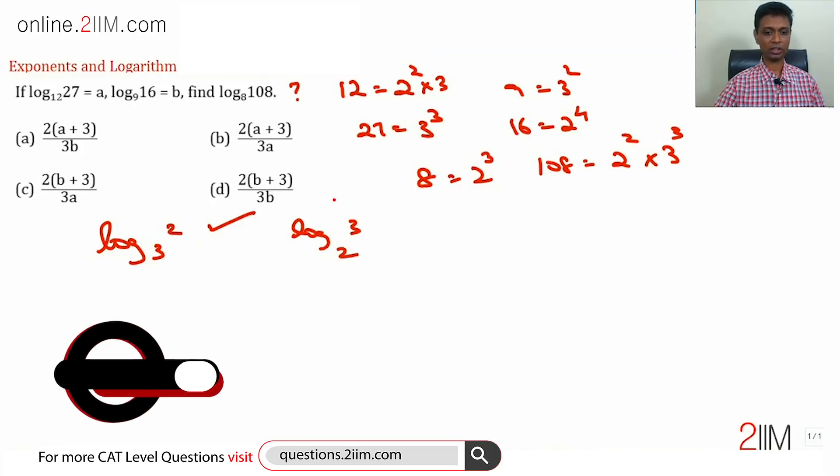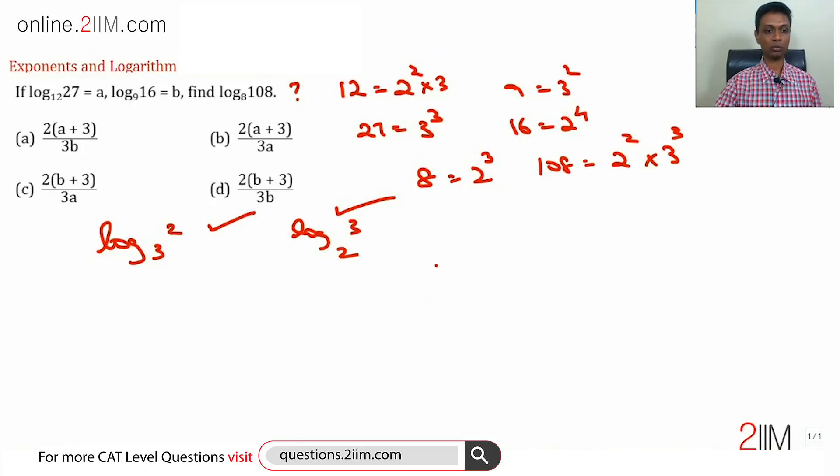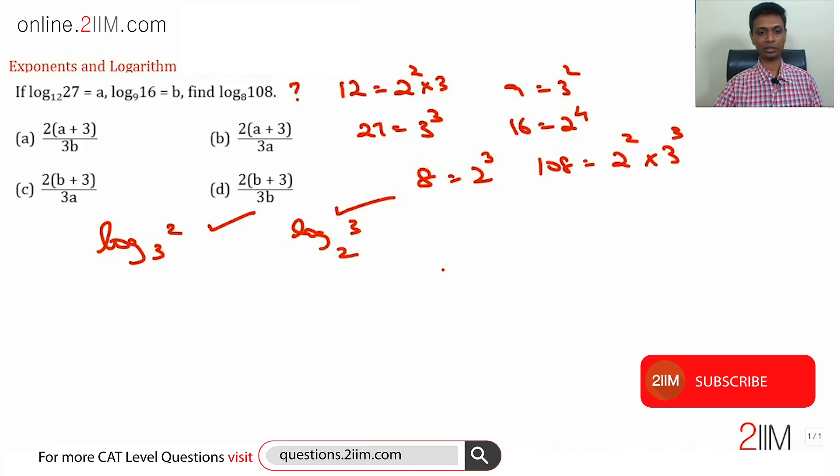The whole idea is once you get that you can approach that. To start with, don't say log 2 to the base 3 does not exist. It exists, it is not a rational number. 3 to the power something is 2, that something is not 1 or 2 or 1/3, there is some other number, it's irrational, right?